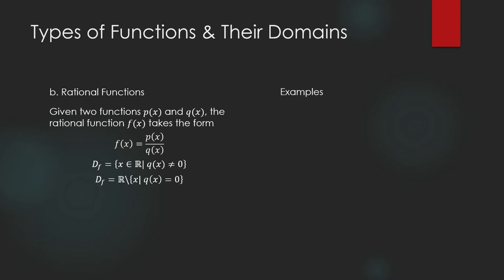Example: f(x) = 2 / (x − 1). This function is undefined when x = 1, which is why the domain is the set of real numbers minus one.